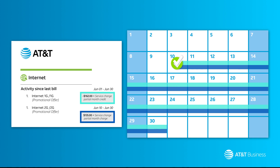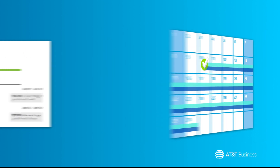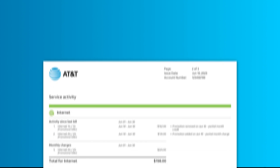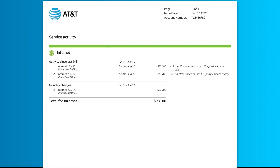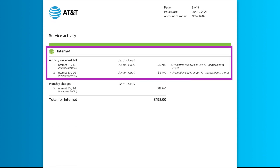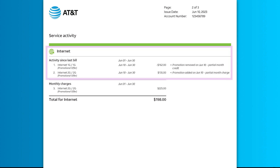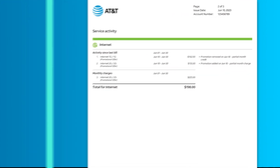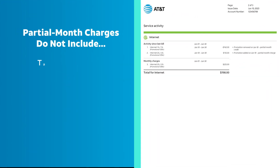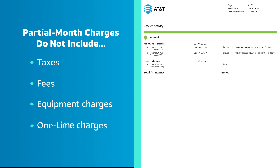We only charge you for the active days a plan or feature was active on your account. Both the credits and charges will appear on your next month's bill as the previous month's charges. Partial month charges apply to monthly recurring charges and do not include taxes, fees, equipment charges, or one-time charges.